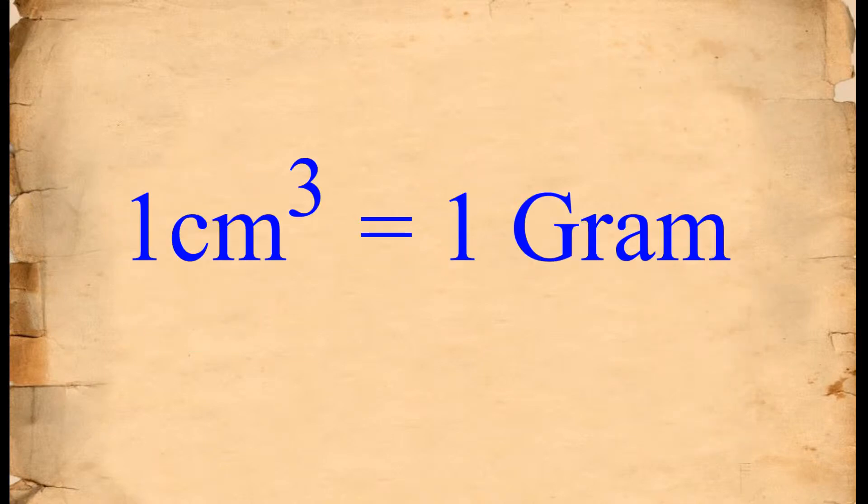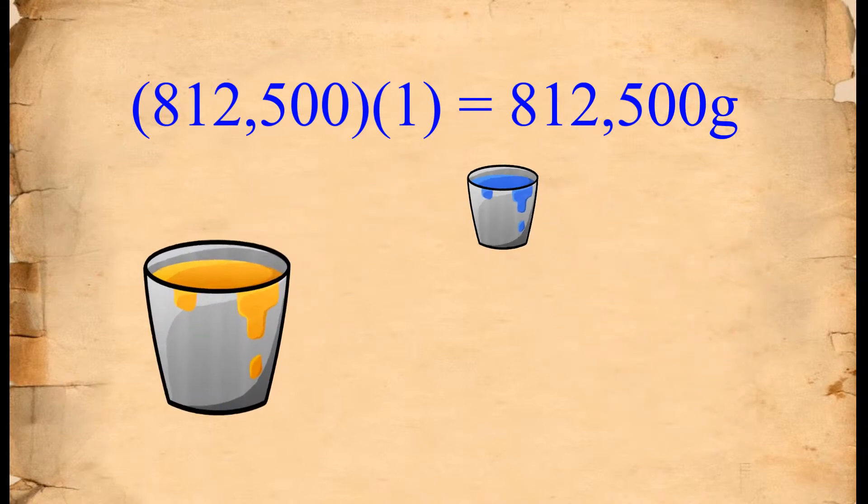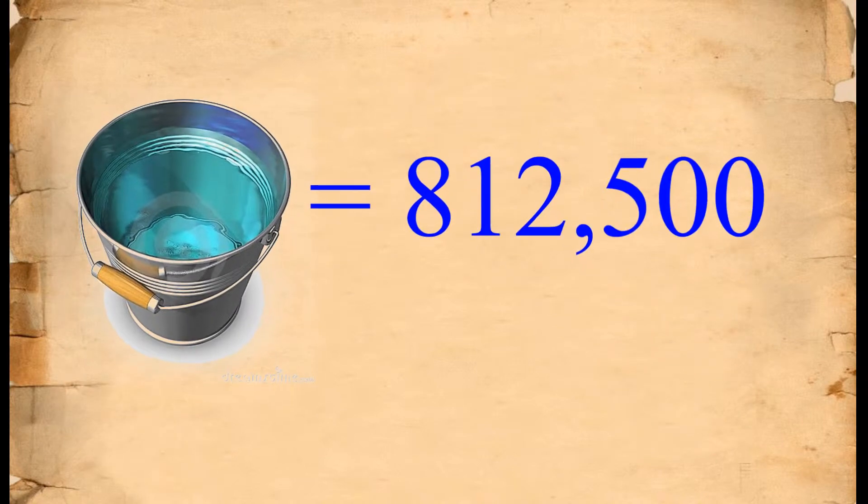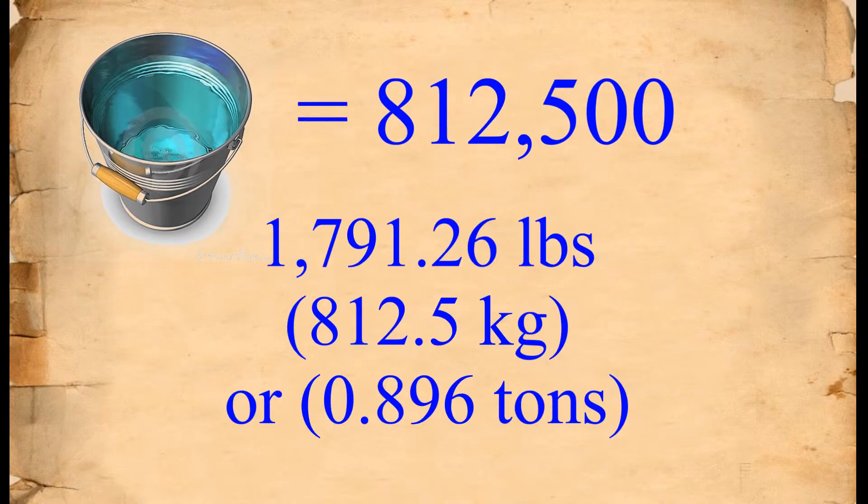We know 1 cubic centimeter of water equals 1 gram. So multiplying the volume by 1 gets us 1 bucket of water weighs 812,500 grams or about 1,791 pounds.